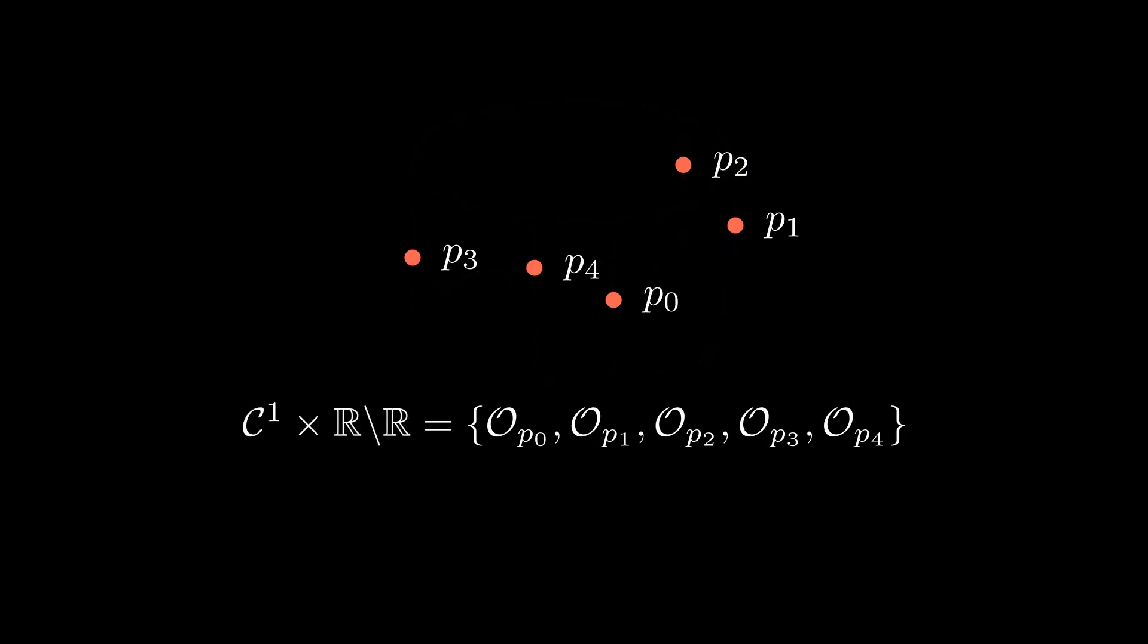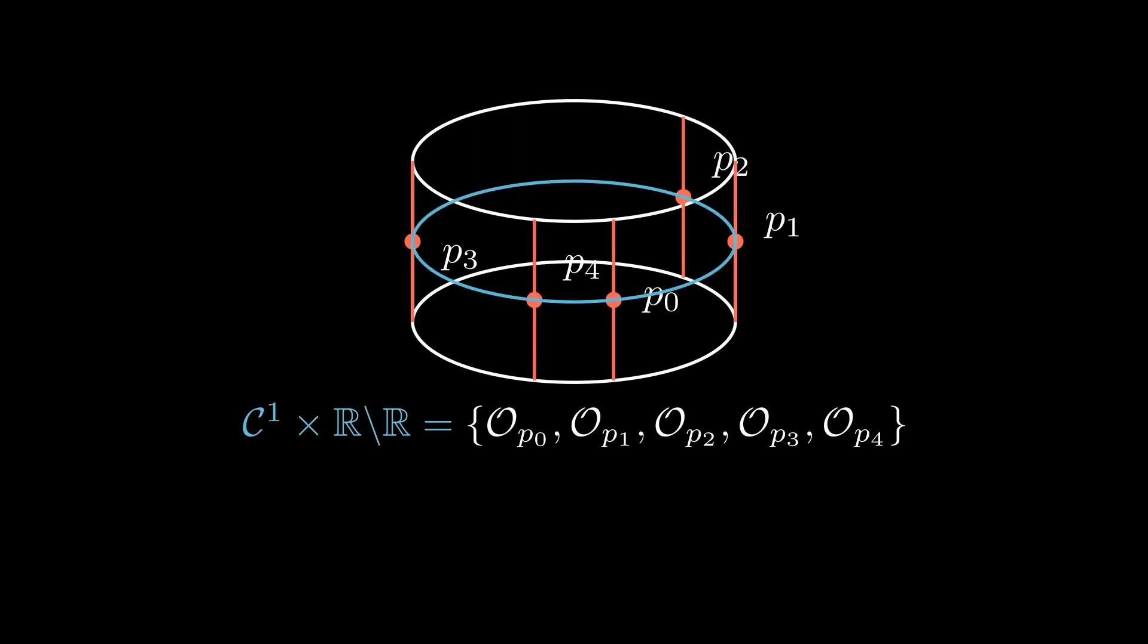If we collect them into a set, we get our quotient space. However, this might seem random. If we move these points along the vertical lines, we see that we get a circle. We have found that our quotient space looks like a circle.